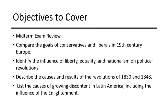We'll begin with an exploration of the competing goals of conservatism and liberalism in 19th century Europe. We'll analyze how these two groups approached issues such as political authority, social structure, and economic policy. Conservatives sought to uphold traditional institutions and maintain order, while liberals aimed to promote individual freedoms, constitutional governments, and social equality. By comparing their objectives, we gain insights into the ideological clashes that defined this transformative period.